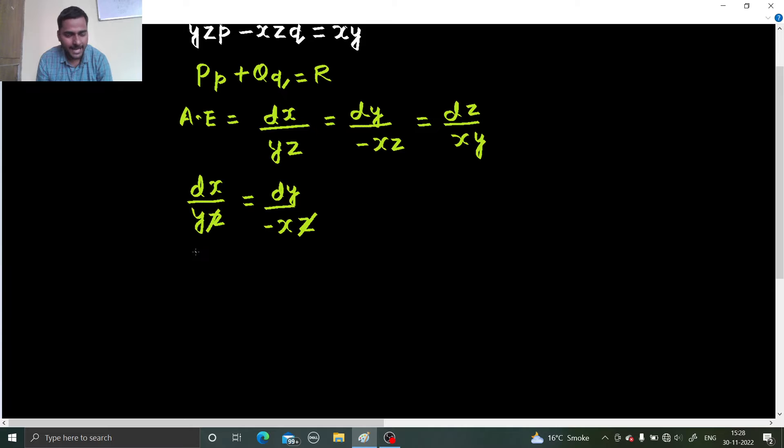Now, what I can see that I can take x on one side, y on the other side, so minus x dx equals to y dy is there. Now, I can easily integrate them. Here I will get minus x square by 2. Here I will get y square by 2 and a constant will be there. Let's say c1.